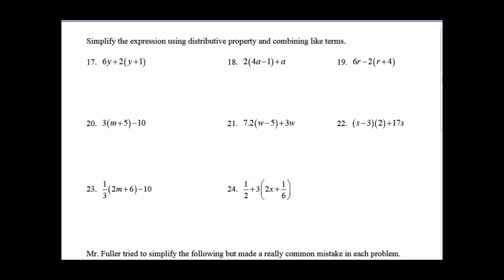Okay, so let's take number 17. Notice we have a 6Y, but we do have 2 times the quantity Y plus 1, so let's distribute first, make this 2Y plus 2. Then notice we have a 6Y and a 2Y, so we get 8Y plus 2.